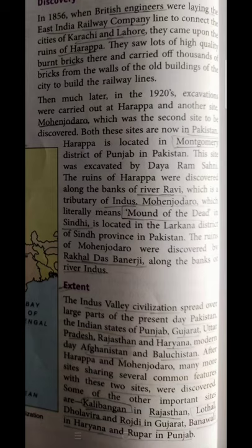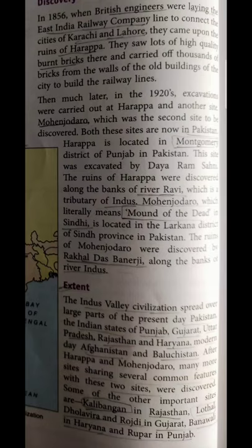In the discovery, the first site excavated was Harappa. After some time it was found that along with Harappa there was one more site — Mohenjodaro. Mohenjodaro, which can be seen in present-day Pakistan, literally means 'Mound of Death' in Sindhi, and its ruins were discovered by Rakhal Das Banerji along the bank of the river Indus.